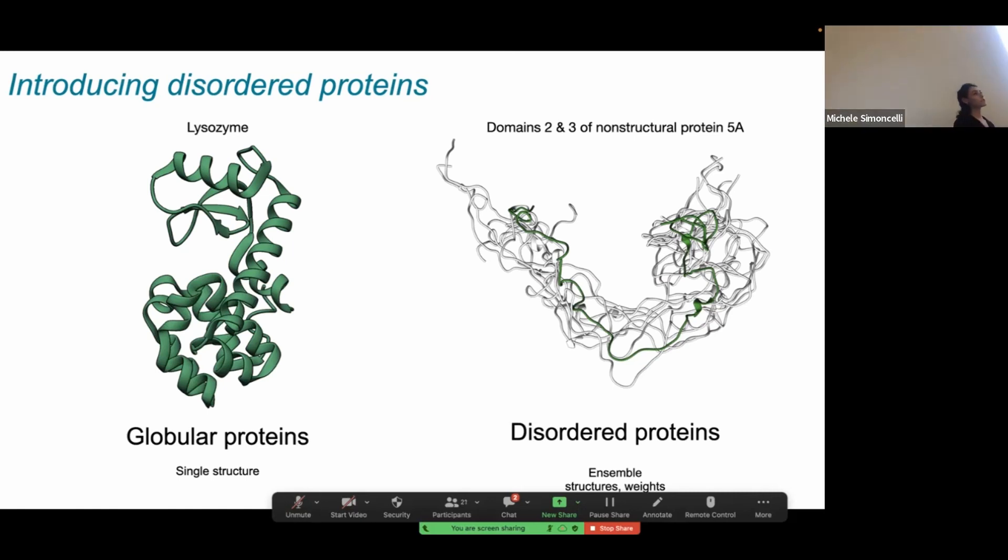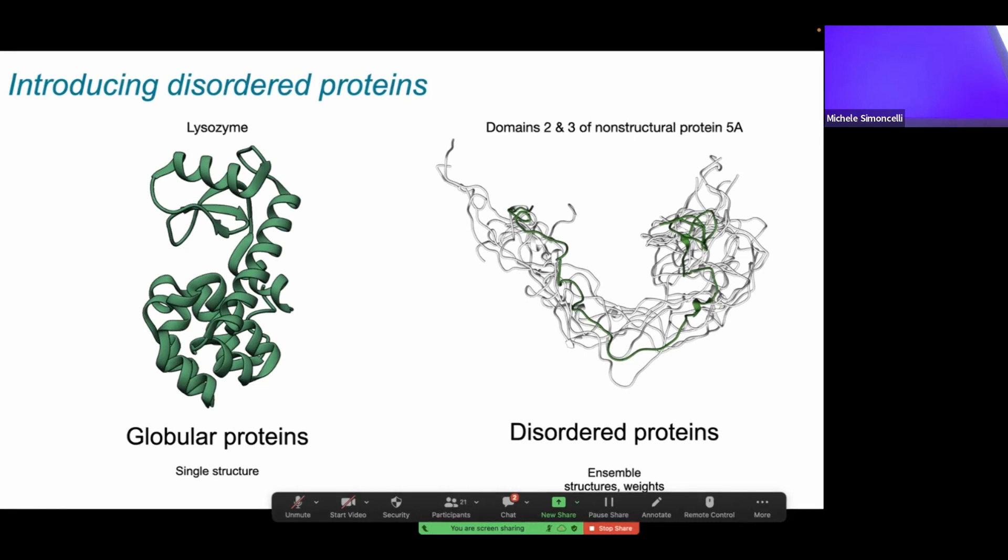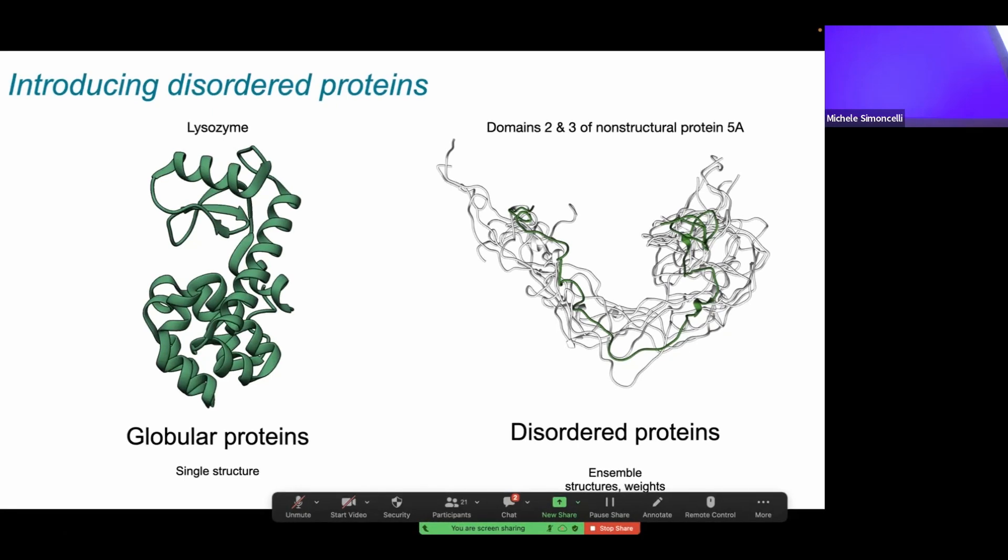The conformational heterogeneity of disordered proteins is really useful for biology because it allows one biomolecule to respond in very different ways depending on the environment. The presence of salt conditions can change the structural ensemble, pH, or various other binding partners, both structured and unstructured. Because they can have so many different structures and therefore functions, we often find disordered proteins as hubs in networking and signaling processes.